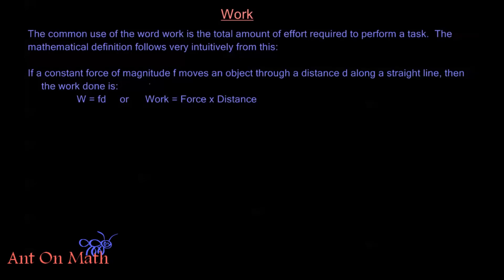What we're saying is the amount of work done is however much force is being constantly applied, times the distance that force has been applied. We're taking the constant force and asking: how long did we have this constant force? And we call the total force exerted there the work.